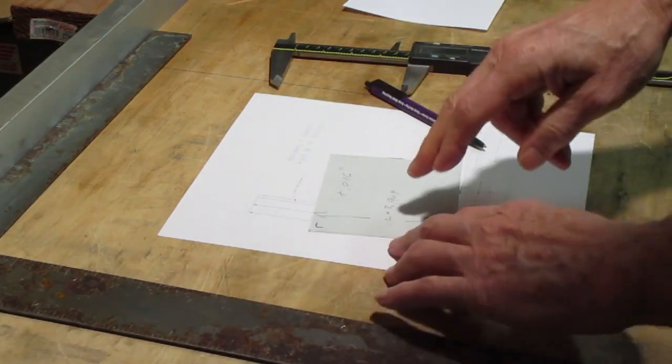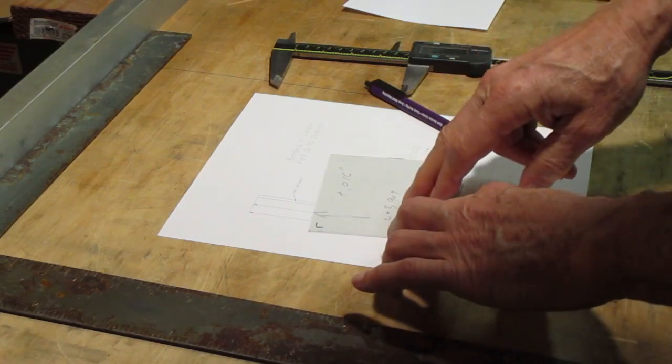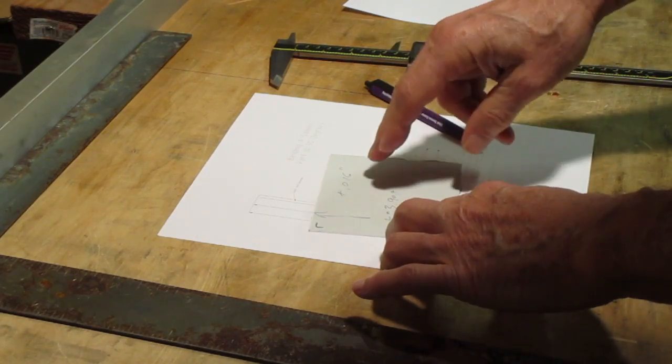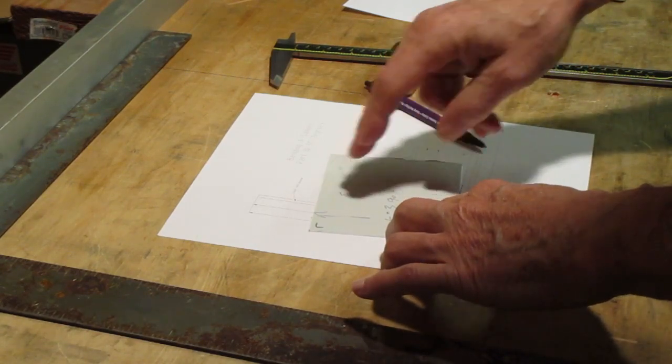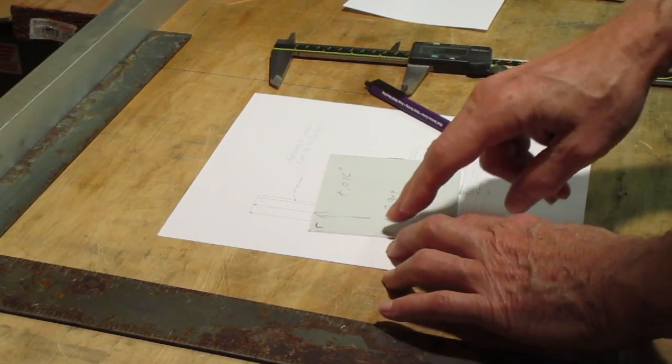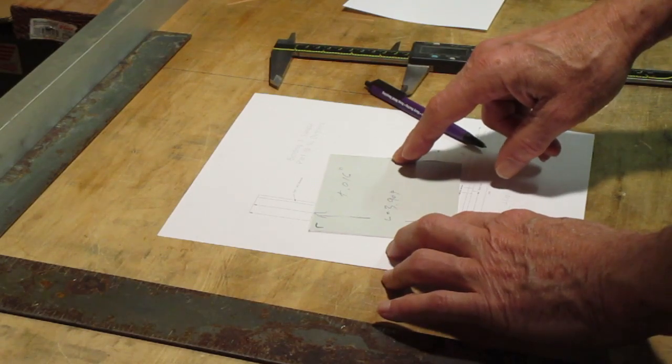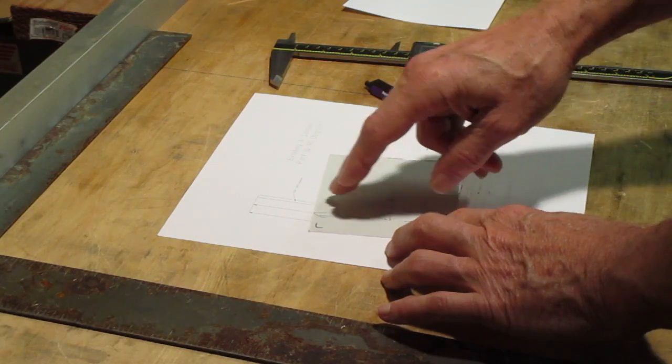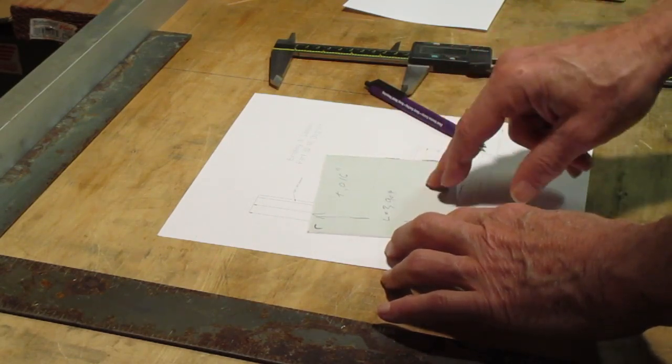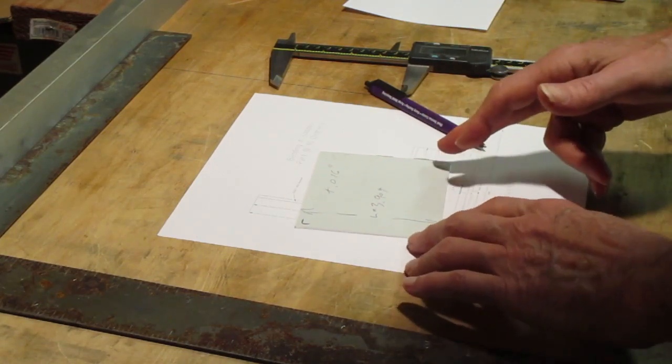So we're plus 16 thousandths here. So what that means is we're going to put our bend line right in the middle so we divide this by 2 and that's going to be our back gauge setting. That's going to mean we're going to be over by 8 thousandths on this side and 8 thousandths on this side. So in a perfect world if our bend allowance is correct then we're going to be looking for 2 and 8 thousandths and 2 and 8 thousandths on this part. So let's go over and bend it and see what happens.